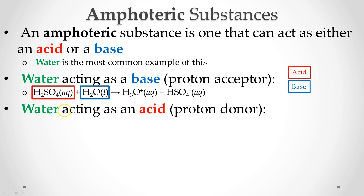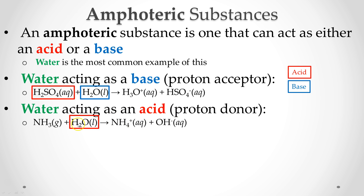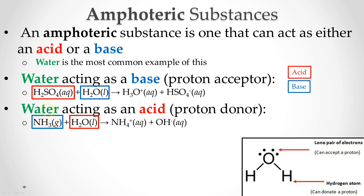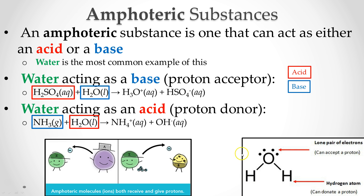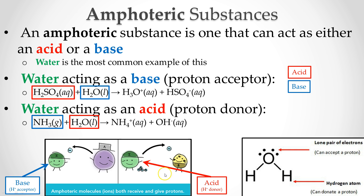Here we have a similar situation, but now water acts as an acid, because it can either accept or donate a proton. Ammonia plus water makes the ammonium cation and the hydroxide anion. Water is the acid here because it donates a proton to ammonia; ammonia is acting as a base. Water took both forms — acid and base — depending upon the conditions, because it has two lone pairs of electrons that can accept a proton and two hydrogen atoms that can donate a proton. So amphoteric substances can go either way.